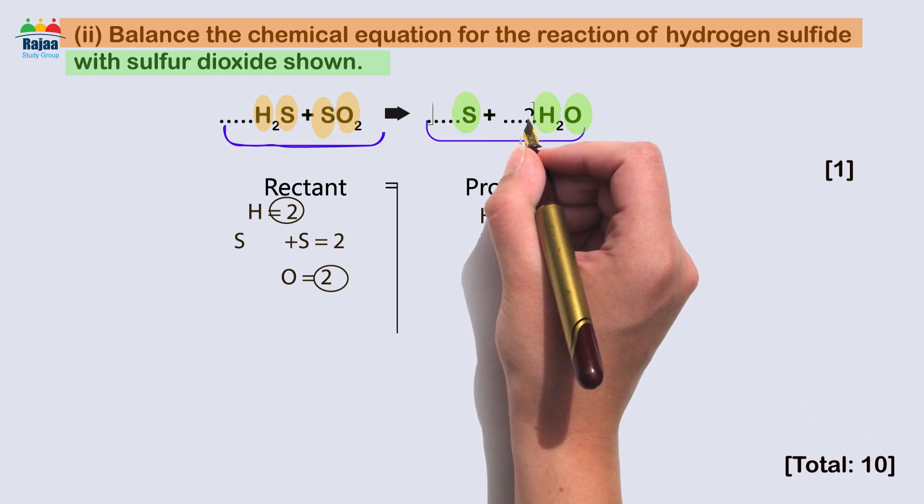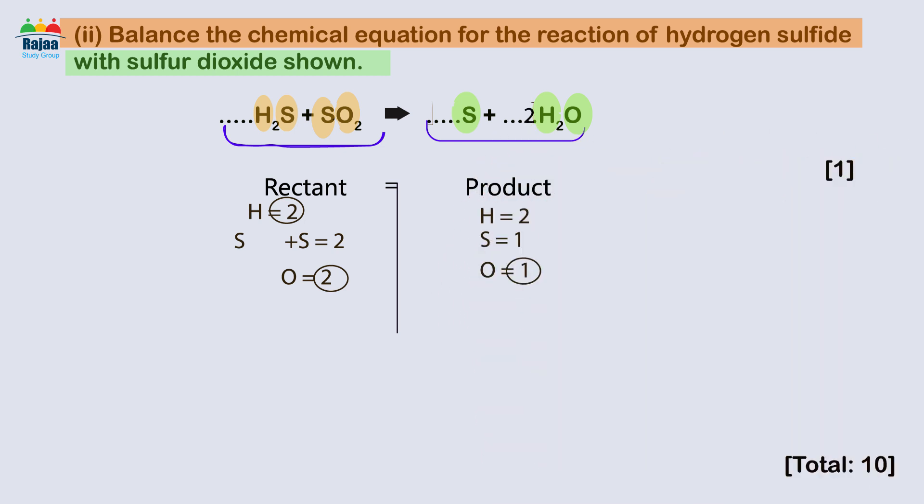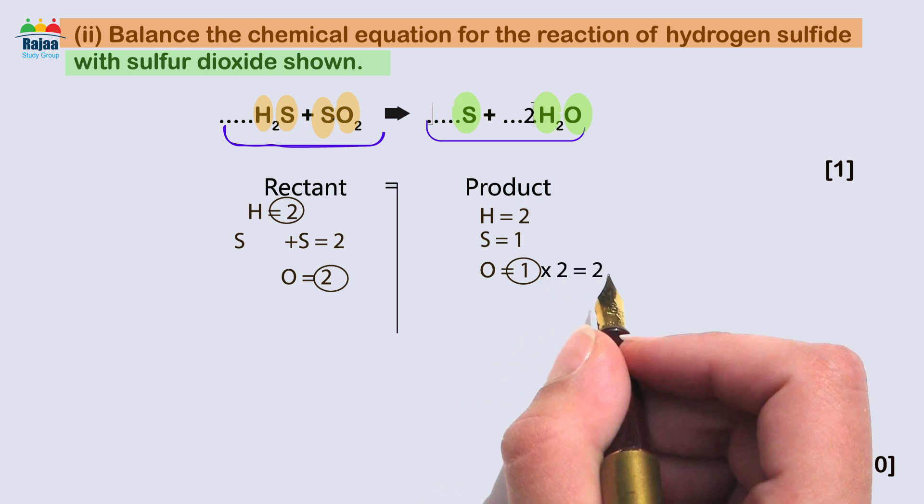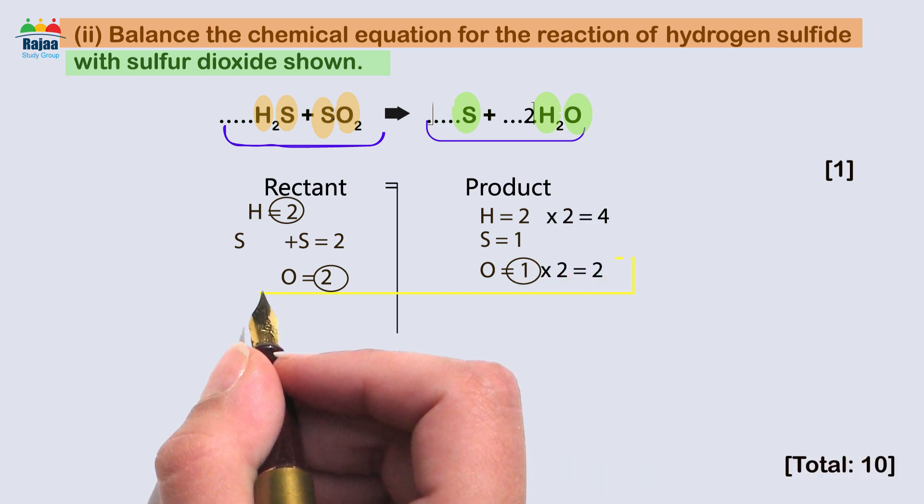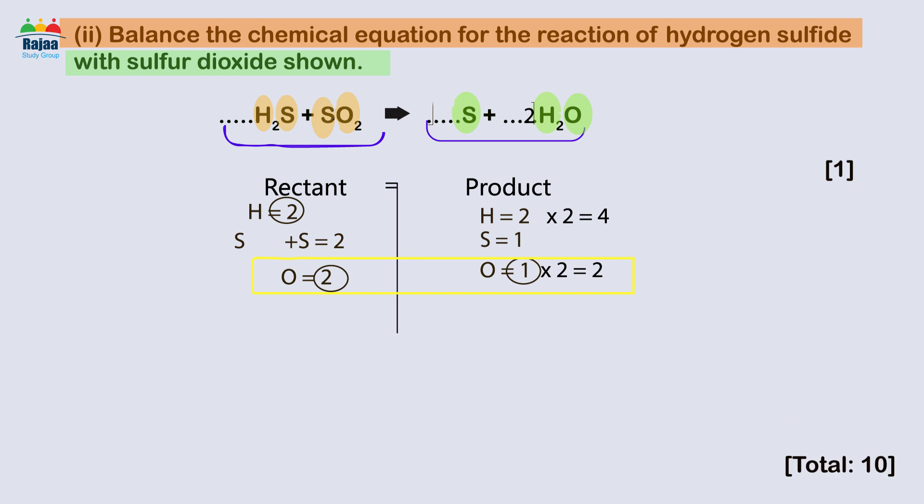So if I put two here, it means that times the one oxygen gave me two oxygen, but this two here also times the hydrogen and that gave me two times two equal four hydrogen. Now my oxygen on both sides are two. As a result, the oxygen is balanced, but the hydrogen and sulfur remain unbalanced.